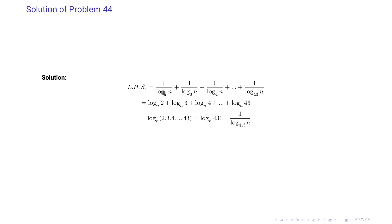We exchange base and argument: log n base 2 becomes log 2 base n, log n base 3 becomes log 3 base n, and so on up to log 43 base n. By the chain multiplication formula, these multiply to give log(2 × 3 × 4 × … × 43) base n, which equals log(43!) base n. Exchanging again gives 1/(log n base 43 factorial).